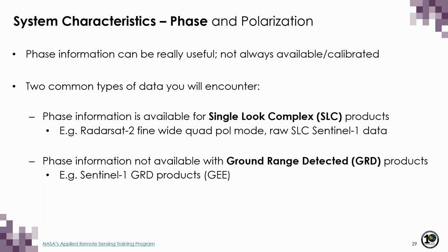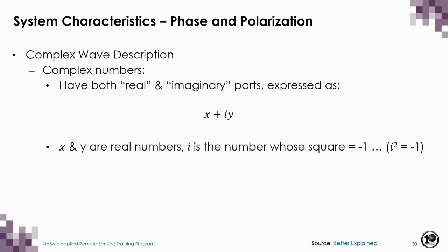Despite the fact that phase information can be very useful, it's not always available or calibrated. Two common types of data you will encounter are single look complex, or SLC, products where phase is available — including Radarsat-2 fine, wide, quad-pole mode data and raw SLC Sentinel-1 data — and ground range detected, or GRD, products where phase information is not available, such as the Sentinel-1 GRD products available on Google Earth Engine.